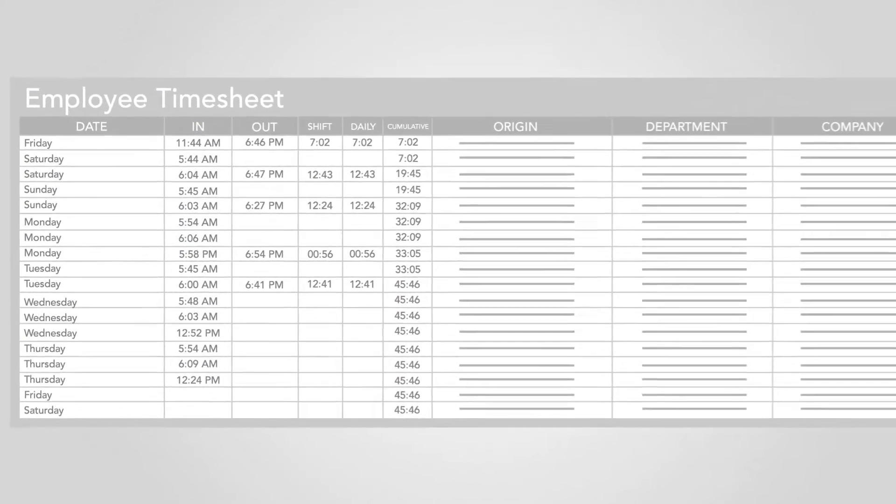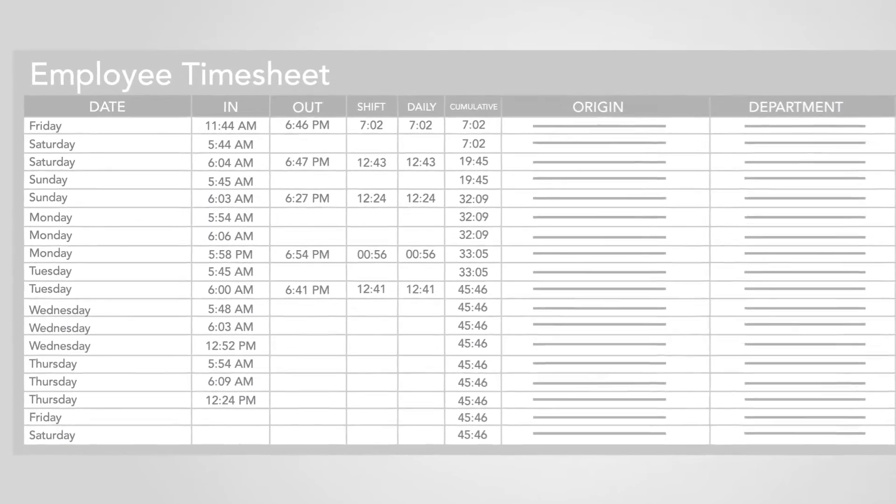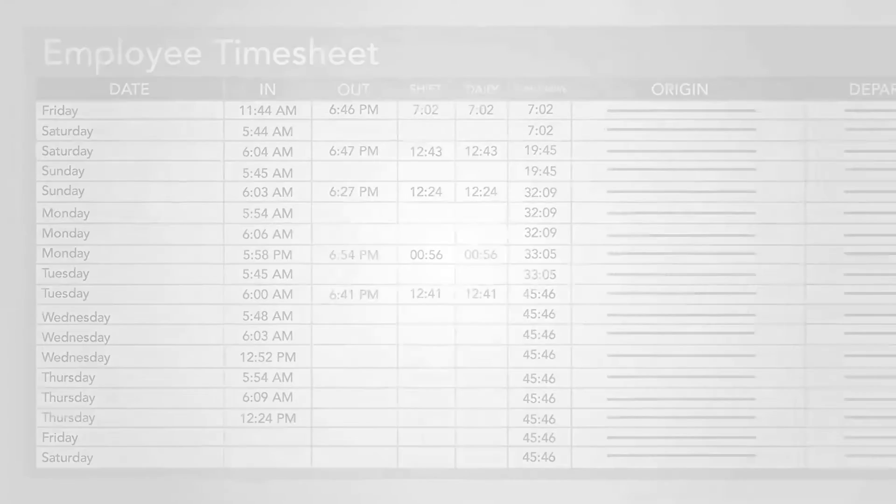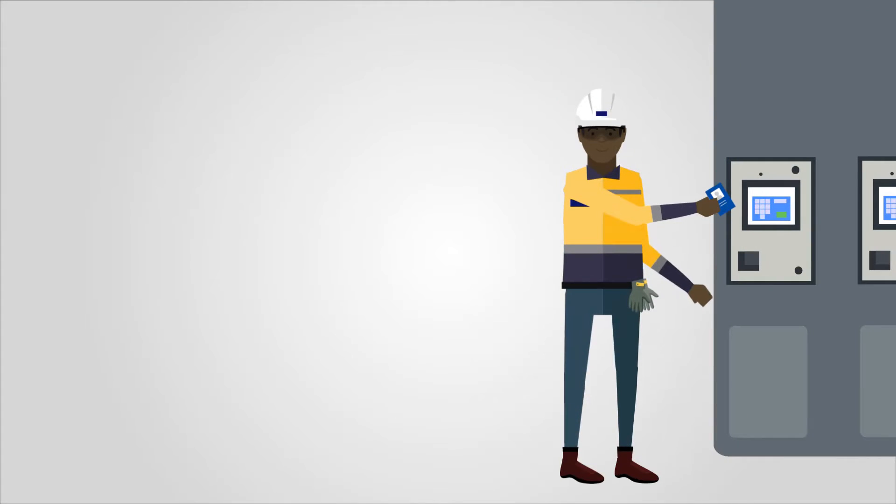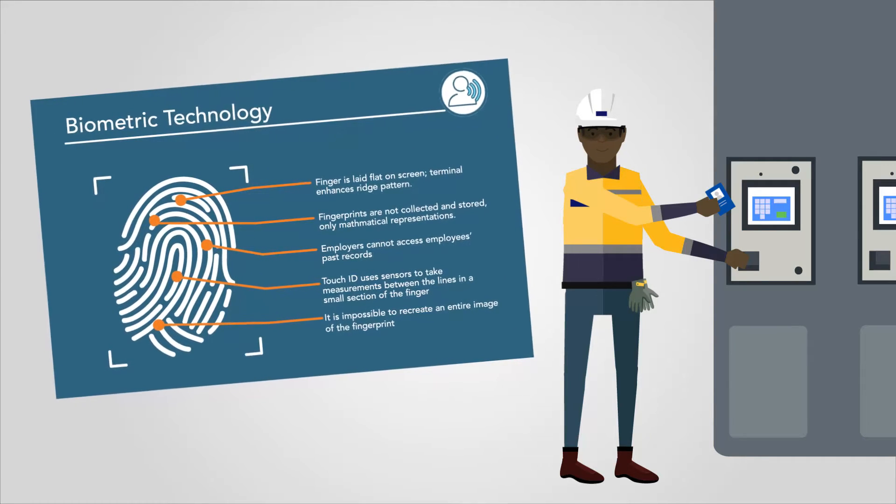Connected Worker will enable online timesheets and attendance for employees and contractors. Validation of identity through badging is a two-factor authentication. Badge in on a tablet or terminal and perform a biometric.